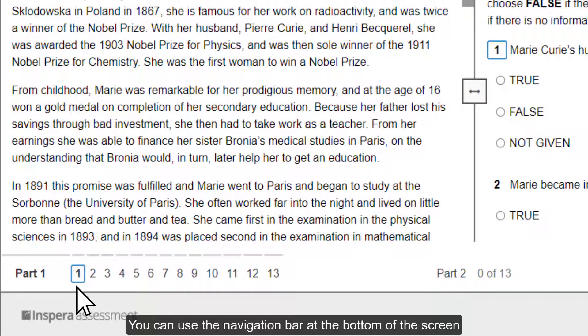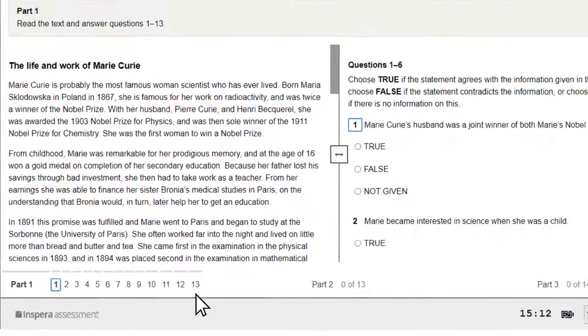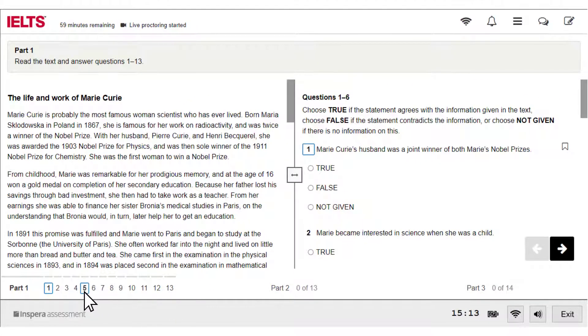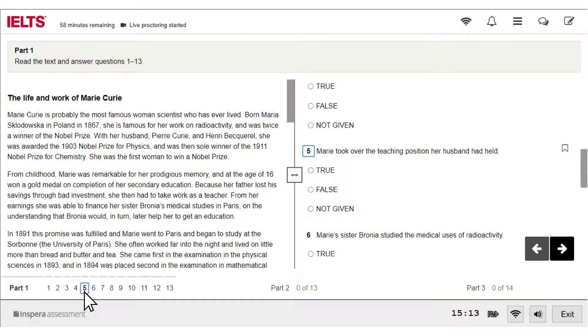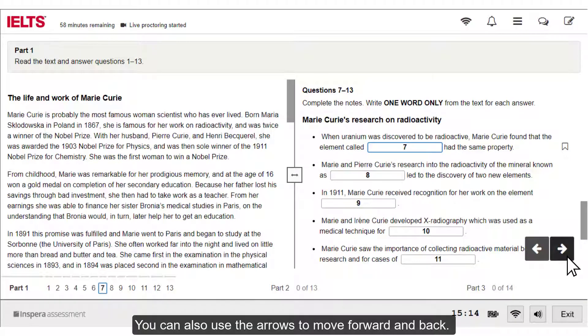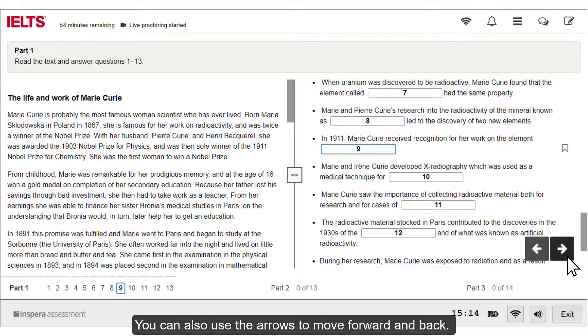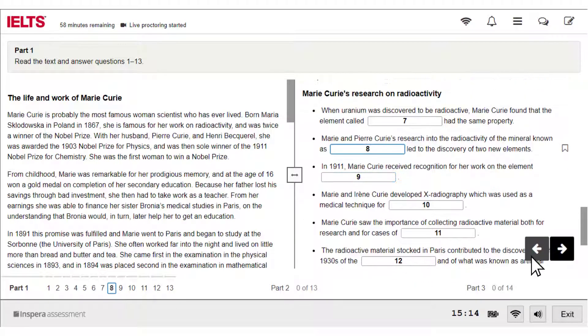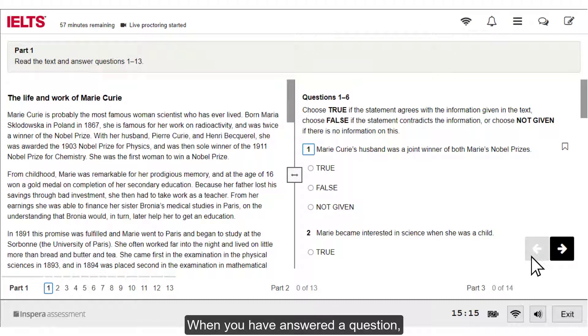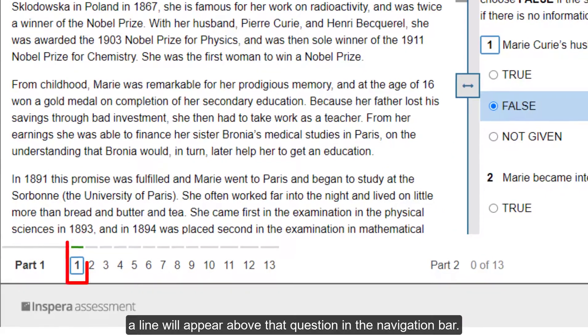You can use the navigation bar at the bottom of the screen to move from one question to the next. You can also use the arrows to move forward and back. When you have answered a question, a line will appear above that question in the navigation bar.